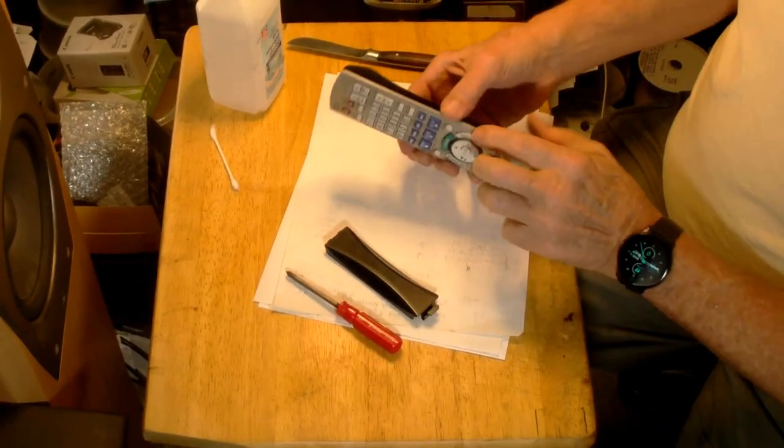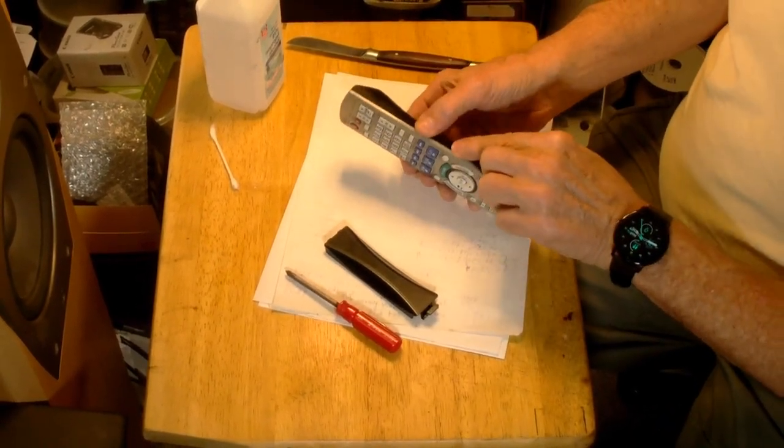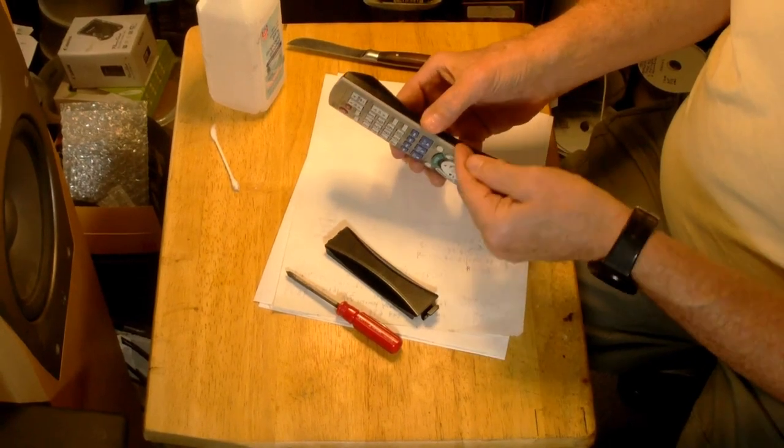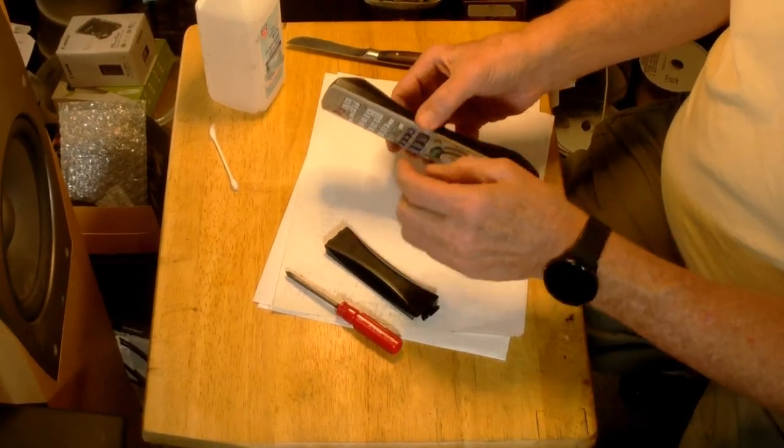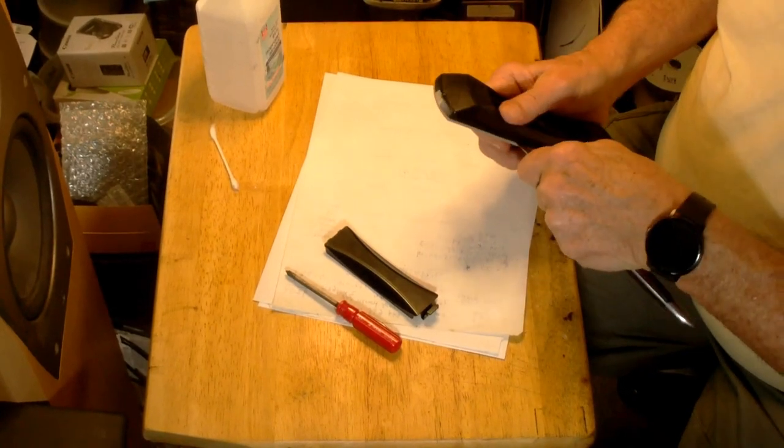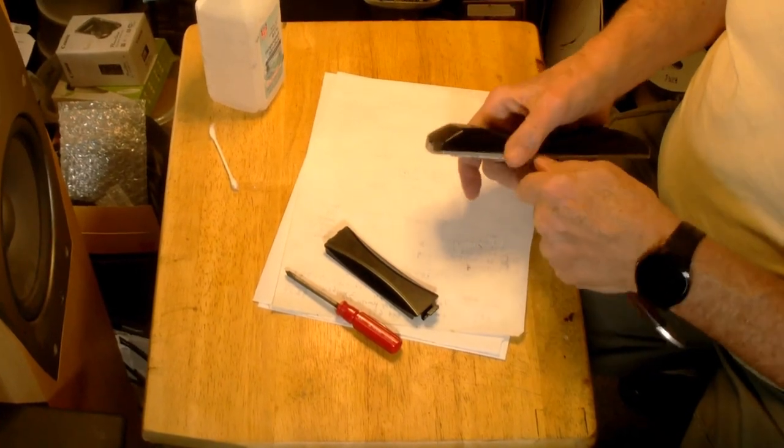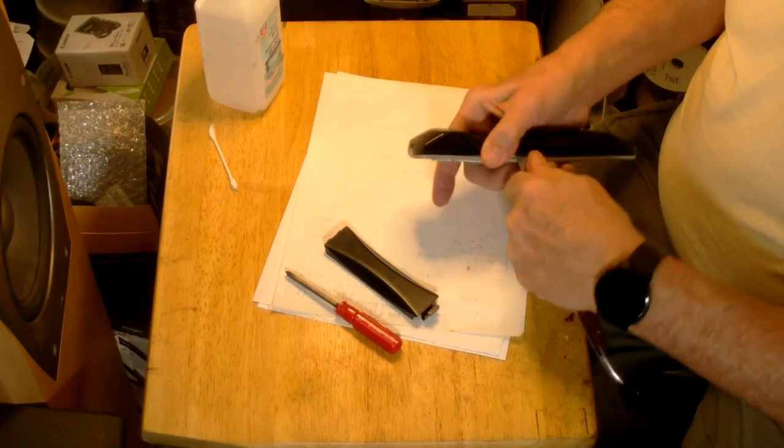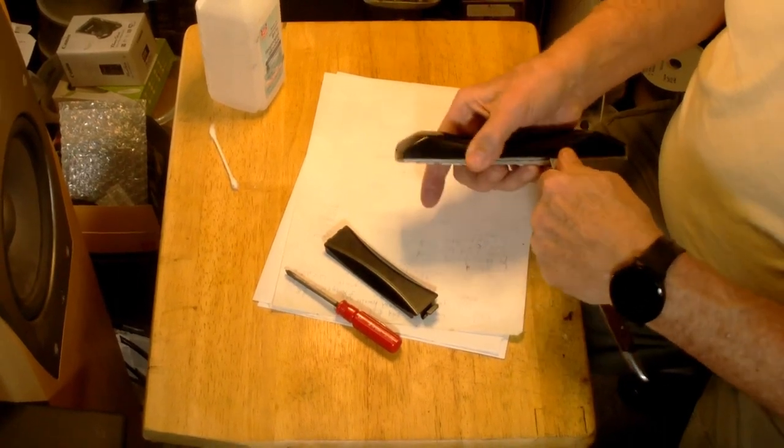Now this one snaps together, so the black outer cover, you have to sort of peel it out so that the snaps come undone. I'm just using a knife to do that and it pops off, and you kind of work your way down to the bottom.